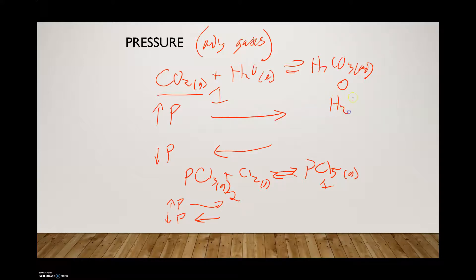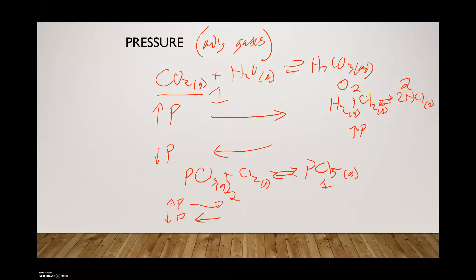One more example: all three species are gases, with two moles of gas on the left and two moles on the right — they're equal. Increasing pressure doesn't make a difference because they're balanced, so no change will be observed. Decreasing pressure also causes no change. Pressure only makes a difference when there are different numbers of moles of gas on the reactants versus products side.